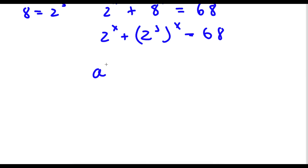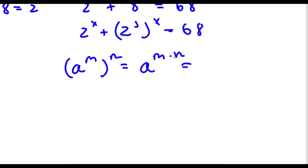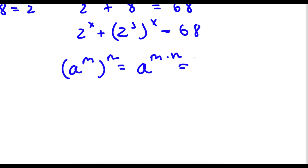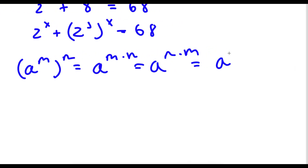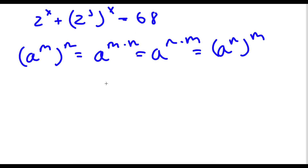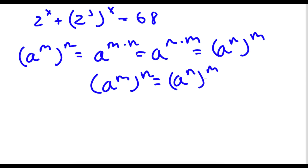Now if I have something in the form a to the power of m to the power of n, this is the same thing as a to the power of m times n. And a to the power of m times n is interchangeable, meaning this is the same as a to the power of n times m. So to put this all together, a to the power of m to the power of n is the same thing as a to the power of n to the power of m.